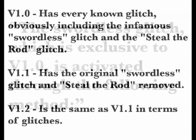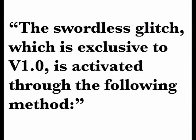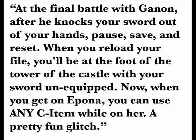Just to give you a little rundown of what I'm going to do, I'm going to follow the instructions coming up. The swordless glitch, exclusive to V1.0, is activated through the following method: At the final battle with Ganon, after he knocks your sword out of your hands, pause, save, and reset. When you reload your file, you'll be at the foot of the tower of the castle with your sword unequipped. When you get on Epona, you can use any C item while on her. A pretty fun glitch.